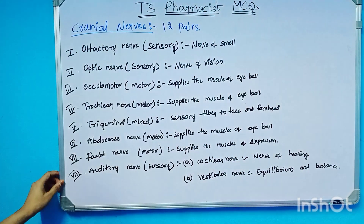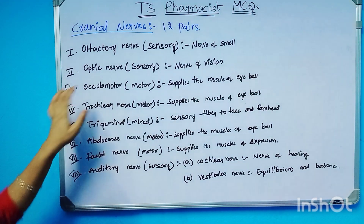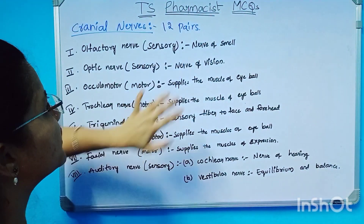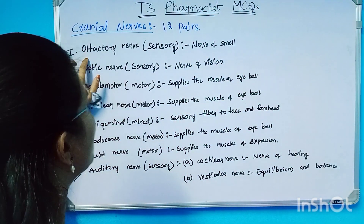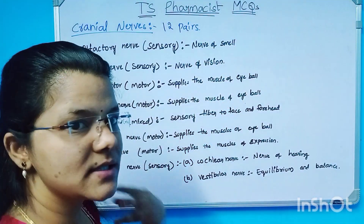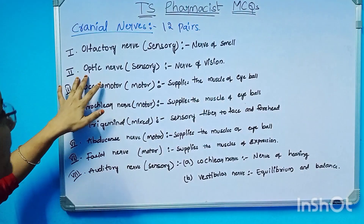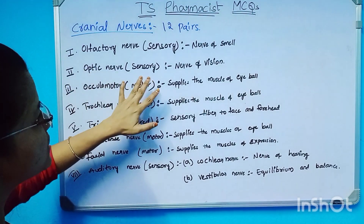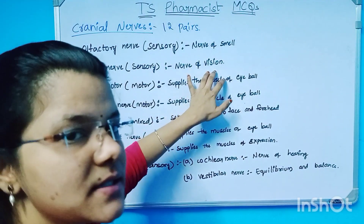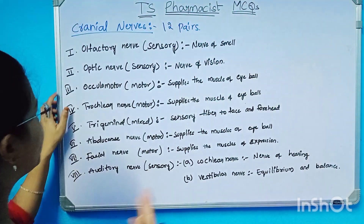The first cranial nerve is the olfactory nerve. It is a sensory type nerve — it is the nerve of smell, responsible for the sense of smell. The second is the optic nerve, also a sensory nerve. It is the nerve of vision.